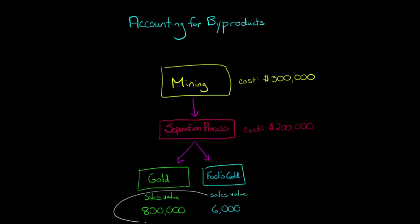So if we add up the sales values here we have a total of $806,000 almost all of which is attributable to the gold. So in this case we would call the fool's gold a byproduct.